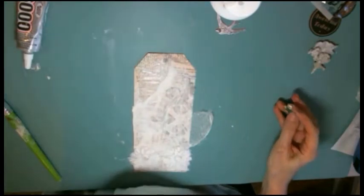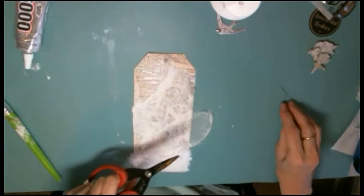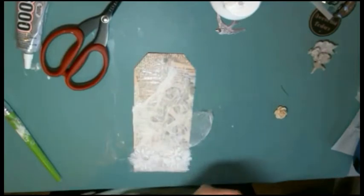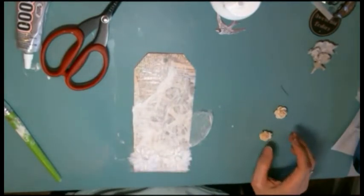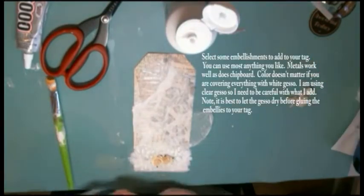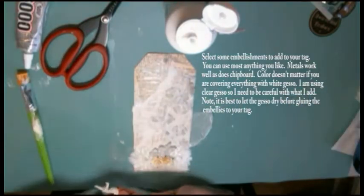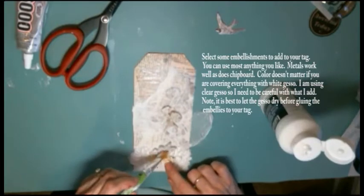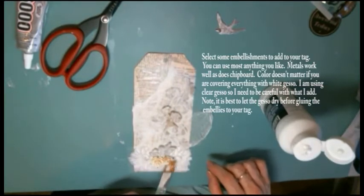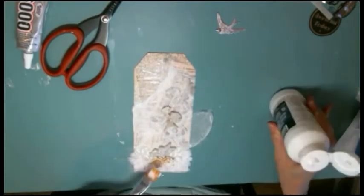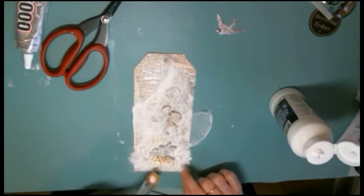Okay, next I'm going to put a couple of flowers on here. If you're using white gesso, you can use most any color flowers, because by the time you get done painting them with white gesso, they're going to be white. Okay, then just go over your flowers and whatever you decide to add to your tag with your gesso. Make sure you get everything good and covered.